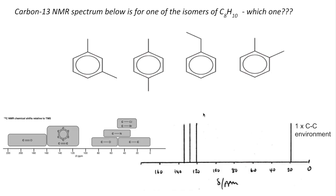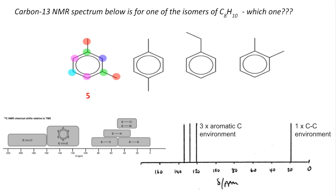We've also got three aromatic carbon environments in the spectrum. Looking at the first isomer from left to right: there's a line of symmetry, so some carbons are equivalent, but overall this isomer has five environments — four of which are aromatic — so the spectrum is not for that one.